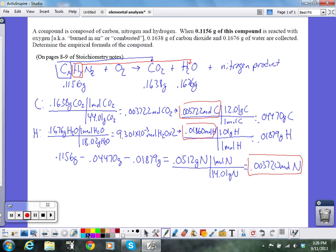So first, I'm going to start with carbon, 0.003722. Divide by the smallest, 0.003720. And that's pretty darn close to one. So we're just going to call it one. That's 1.00 something. Now, I go to my hydrogen. So that's one carbon.